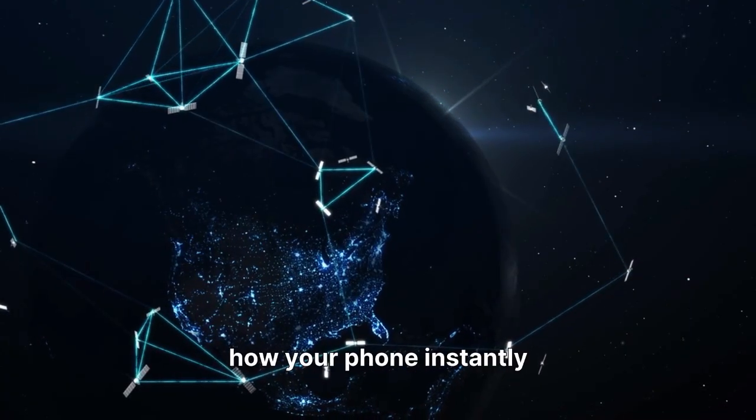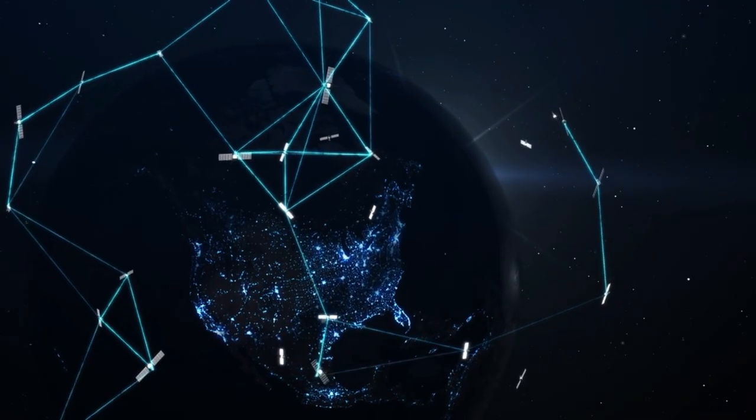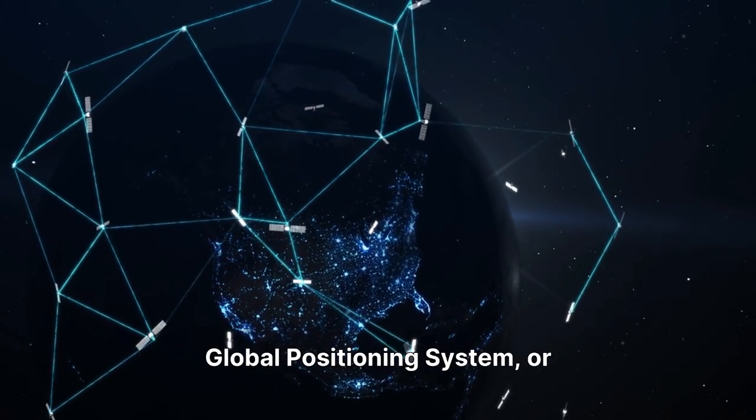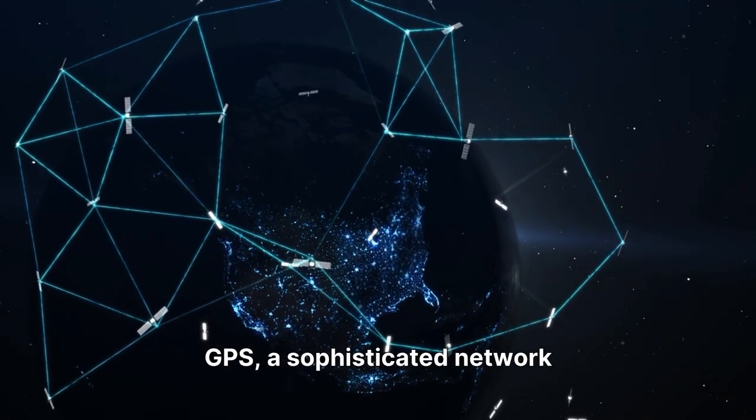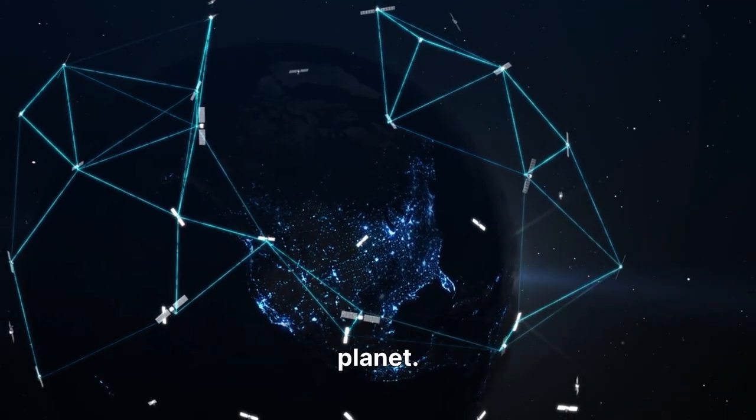Have you ever wondered how your phone instantly knows exactly where you are on Earth? This incredible feat is made possible by the Global Positioning System, or GPS, a sophisticated network of satellites orbiting our planet.